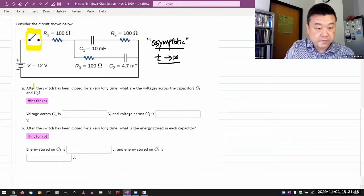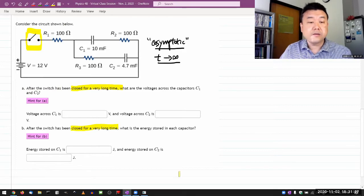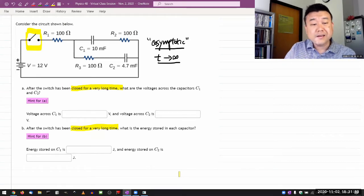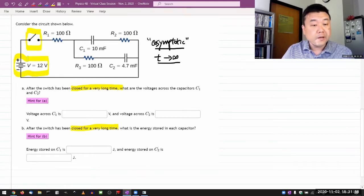That's why it's saying after the circuit has been closed for a very long time - it's a keyword saying that we are looking for the asymptotic behavior. This only works if a circuit reaches some kind of steady state eventually, and that'll usually be the case as long as you have a DC battery.